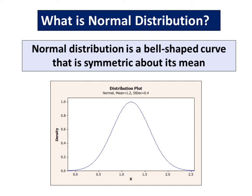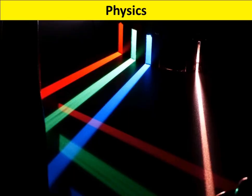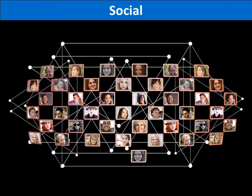The normal distribution is the most common statistical distribution because approximate normality arises naturally in many physical, biological, and social measurement situations.